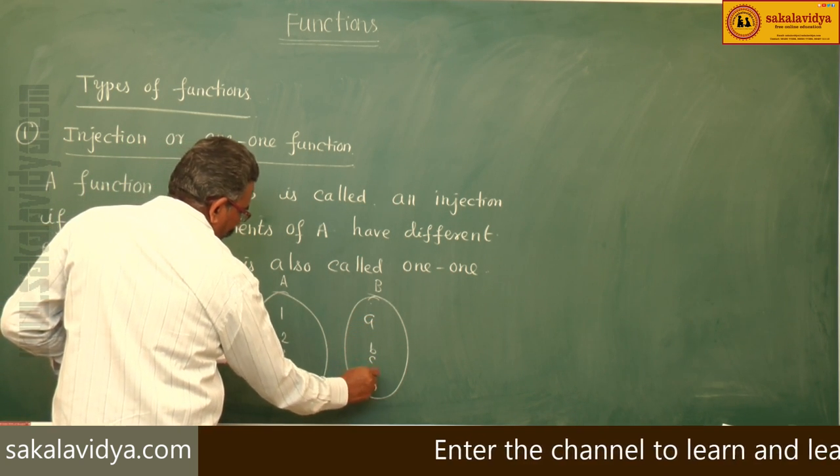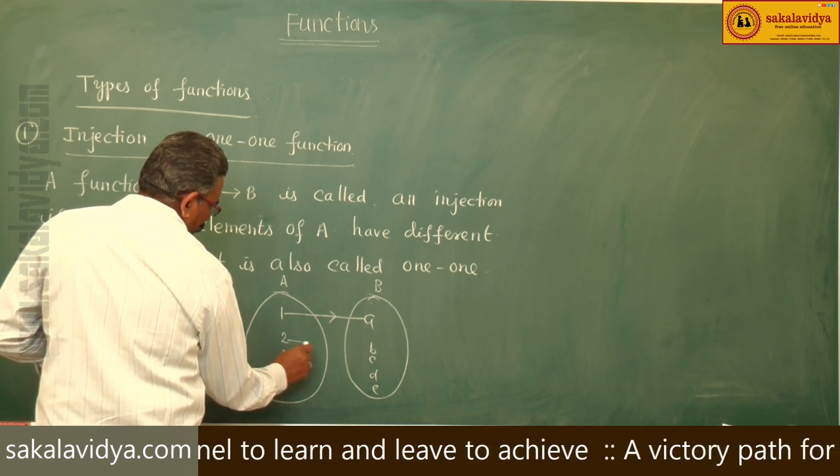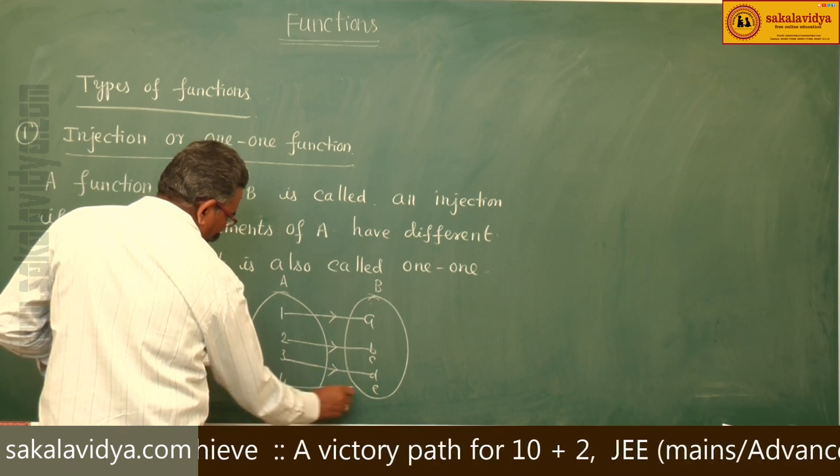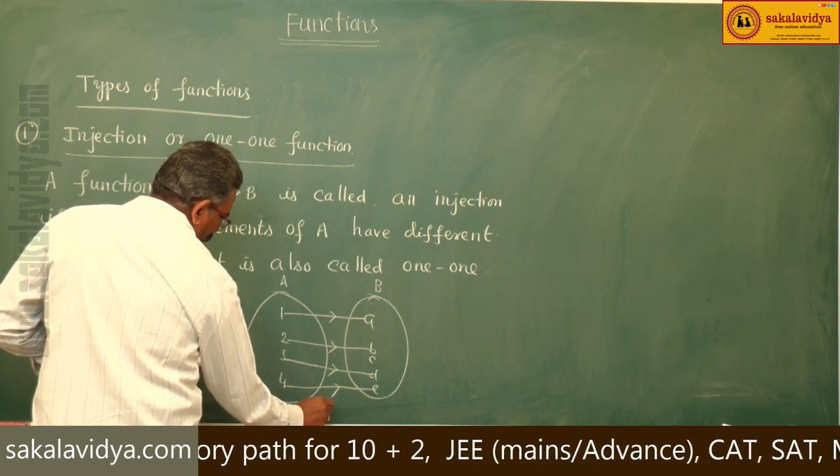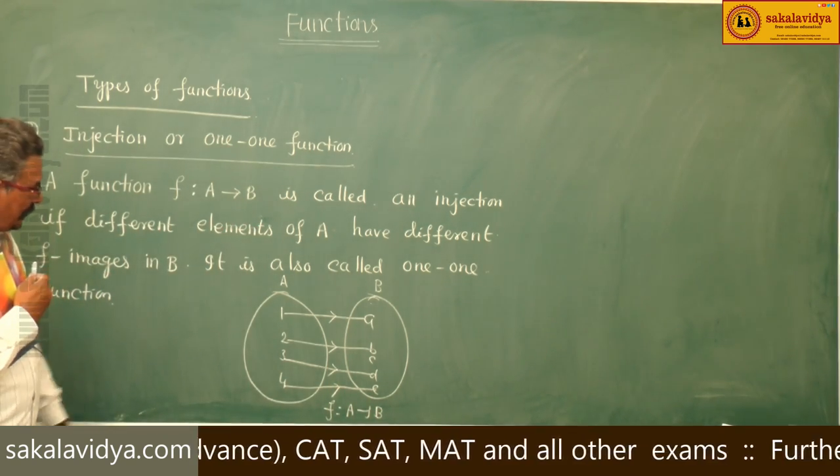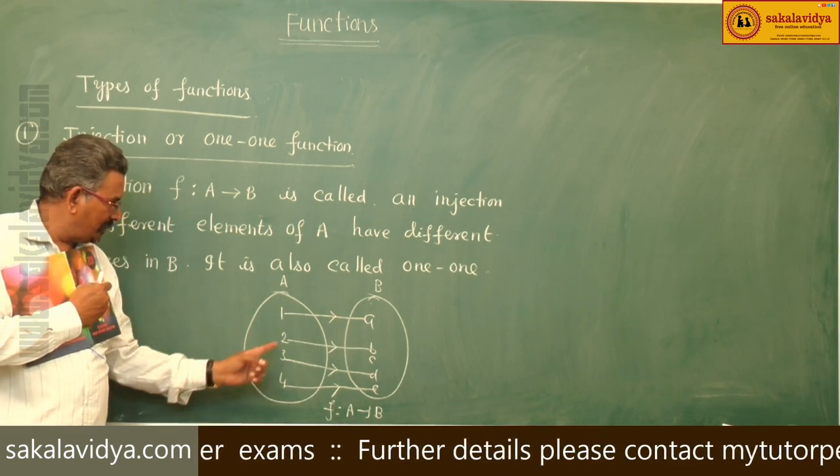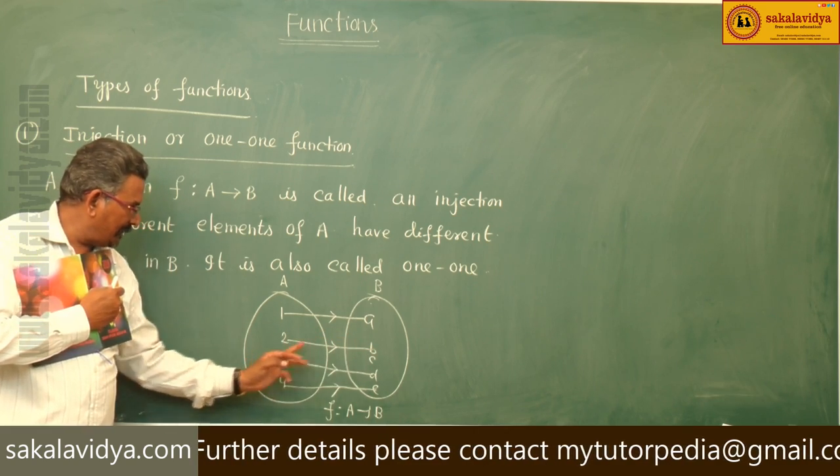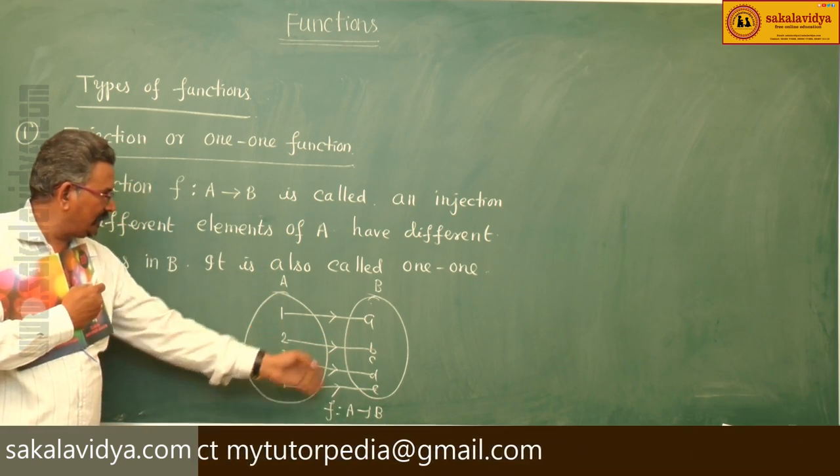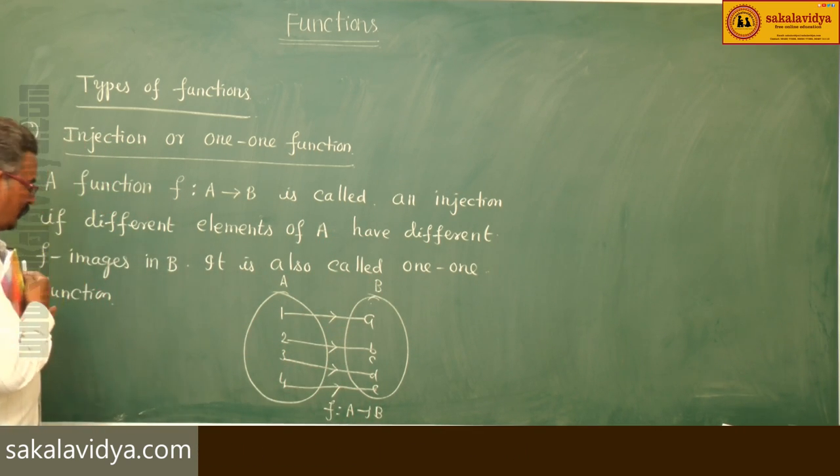Consider sets with elements A, B, C, D, E and 1, 2, 3, 4. We have 1 maps to A, 2 maps to B, 3 maps to D, 4 maps to E. This f maps A to B and is a function. Here see, 1 maps to A, 2 maps to B, 3 maps to D, 4 maps to E. Different elements of A have different images in B, so this function is called a one-to-one function.